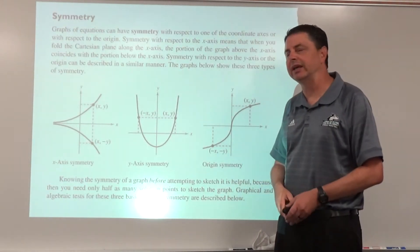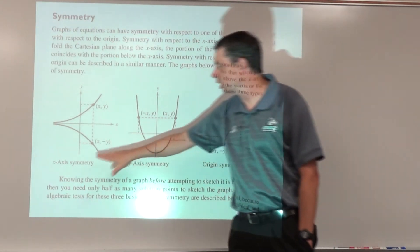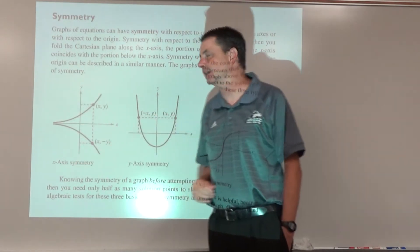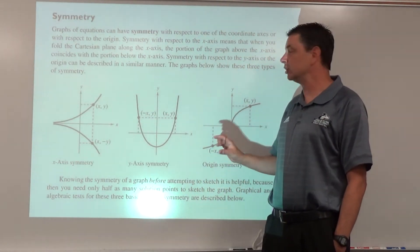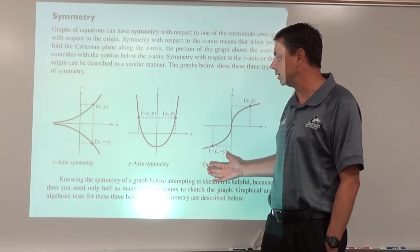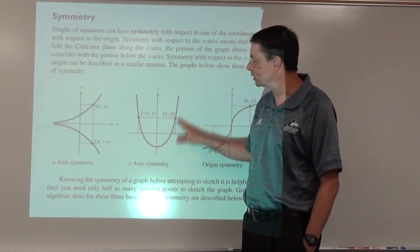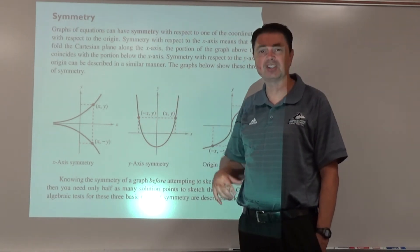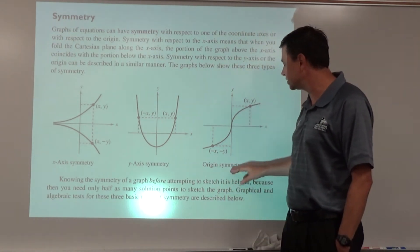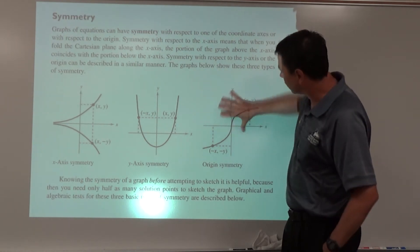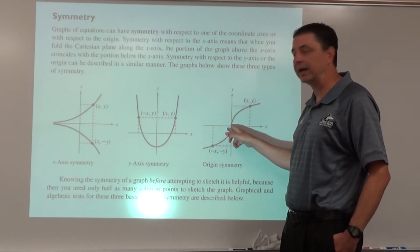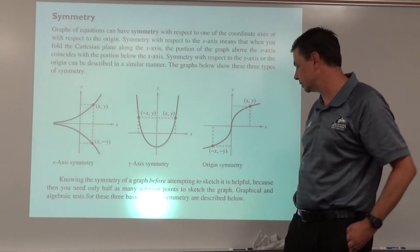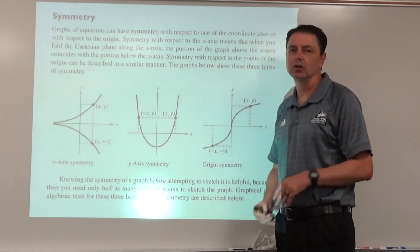A quick look at symmetry that some graphs may or may not have. X-axis symmetry means a mirror image when reflected across the x-axis. Y-axis symmetry — like a standard parabola — means points are mirror images across the y-axis. Origin symmetry, a type of point symmetry, means if you rotate the graph 180° around the origin it looks exactly the same. These symmetry types will lead to other properties we'll discuss later.